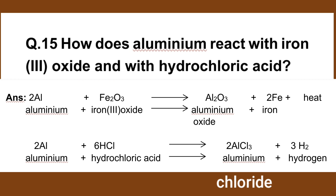Alumina reacts with hydrochloric acid: Al2O3 plus HCl gives AlCl3 solution plus water.